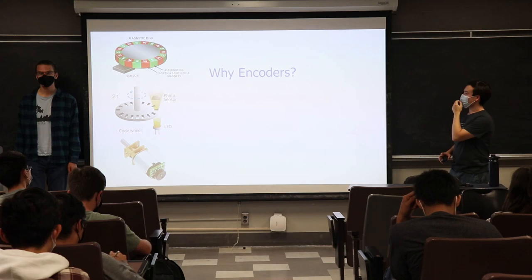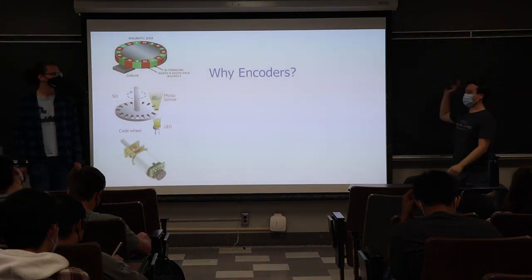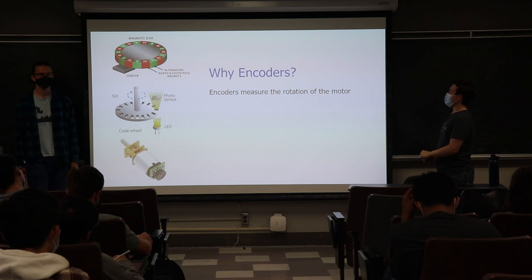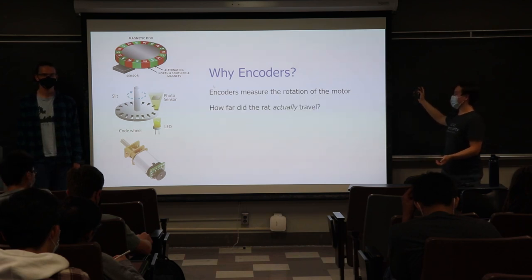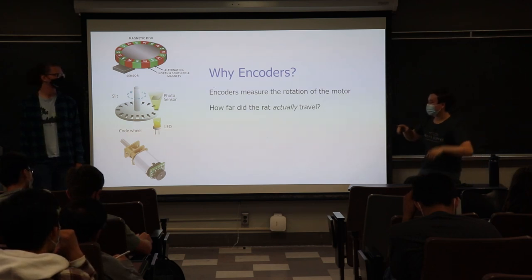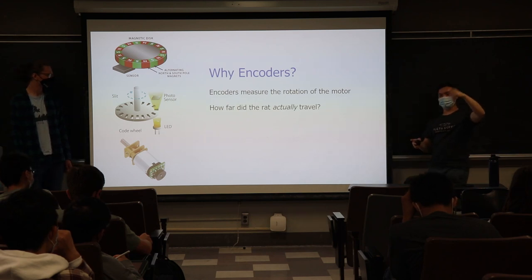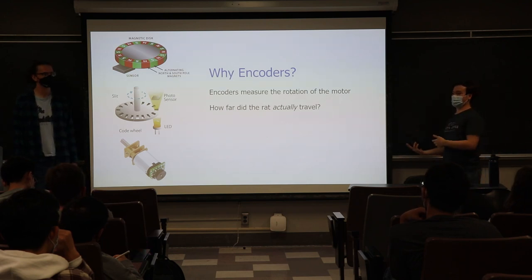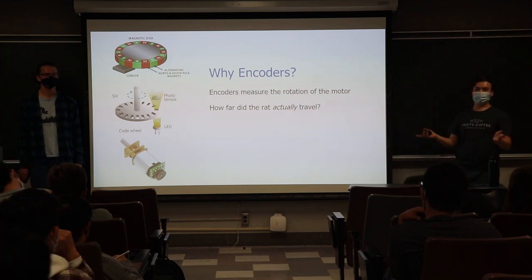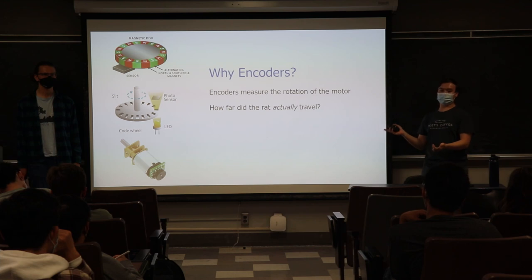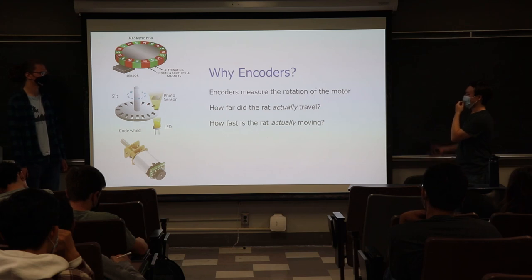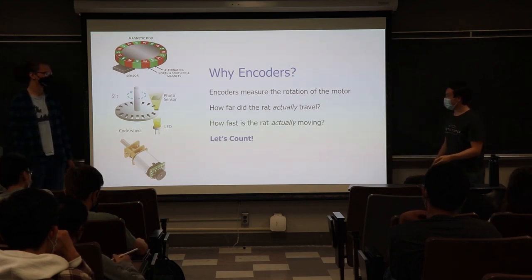Now let's talk about encoders. Encoders measure the position and rotation of our motors so we can figure out how far we've gone. They're mounted to the back of the motor, so every time the motor does a revolution, it measures that and tells us exactly how far we've traveled. This is much better than estimating based on how long the motor was on, because individual motors can vary slightly — so the same on-time might produce slightly different distances.